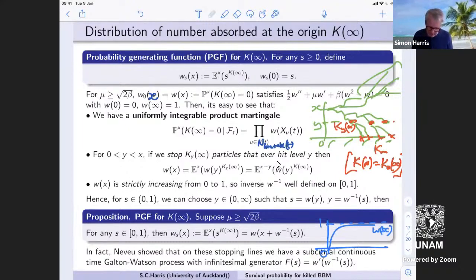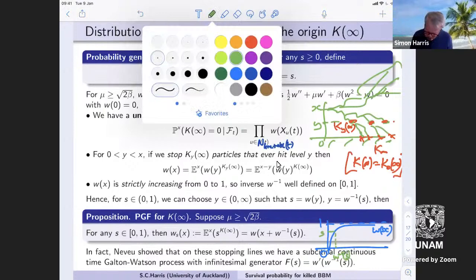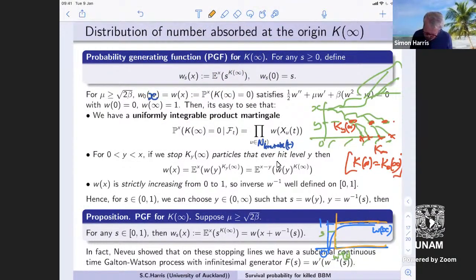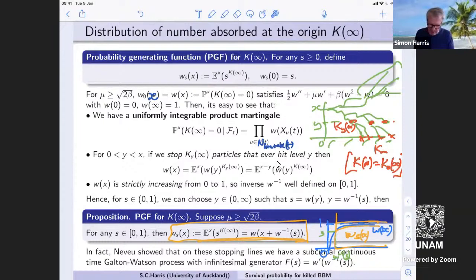What this allows me to say is that all of the generating functions, this is really nice now, all of the generating functions are just a shift. So this is my w_X function, goes from 0 to 1, and all of the other generating functions, basically it's this picture. I find the level S there, and then I find where that is, that's w inverse of S, and basically this is now my PGF, that's my solution w_s. So basically I just shift. I'm building all of the PGFs out of the one solution.